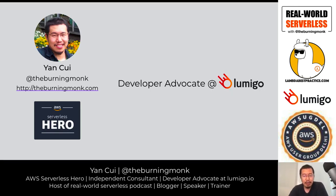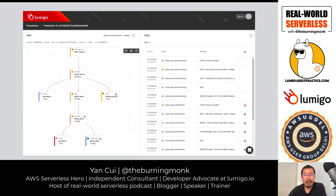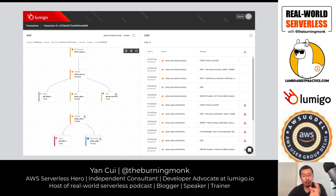Nowadays I spend half my time working with Lumigo as a developer advocate, trying to improve the state of serverless observability. Lumigo is a troubleshooting platform for serverless applications that makes it really easy to debug issues even when they span across API Gateway, EventBridge, Kinesis, SNS, and so on — making it easy to see everything happening within one transaction so you can identify where the problem is.